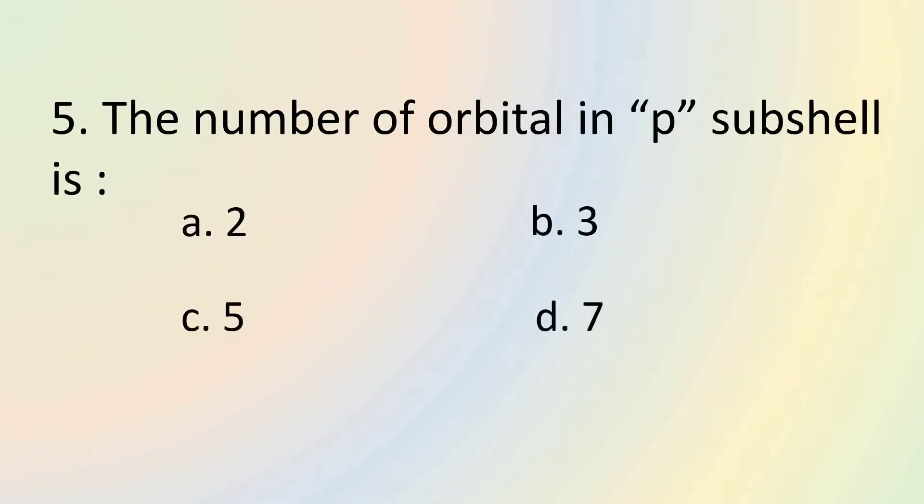Question number 5 asks us about the number of orbitals in P subshell. The number of orbitals in P subshell is 3. Let's understand what shell, subshell and orbitals mean.